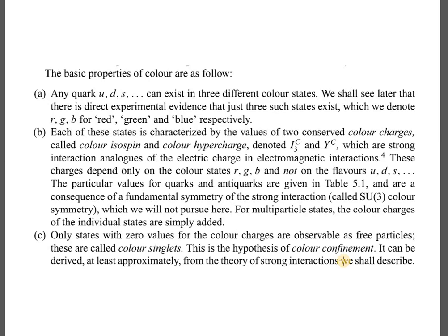Adding or introducing the concept of color isn't sufficient — there are more properties of color which can be inferred. First, any quark will exist in three different color states. Second, each of these states is characterized by the values of two conserved color charges: color isospin and color hypercharge, denoted by I3c and Yc. These are the strong interaction analogues of electric charge in electromagnetic interactions, and they depend only on the color states R, G, B, not on the flavors.